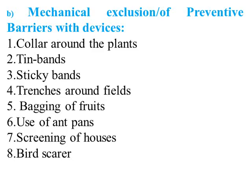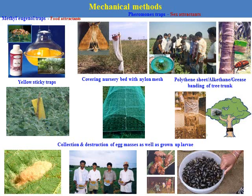These are some mechanical exclusion or preventive barrier devices — pyramid trap, zero-skin trap, polythene or polythenethene sheet placed on the stem. Covering the nursery bed with nylon mesh prevents intrusion of pests. Collection and destruction of egg masses as well as adult stages. Polythene sheet is also placed over plant cells.